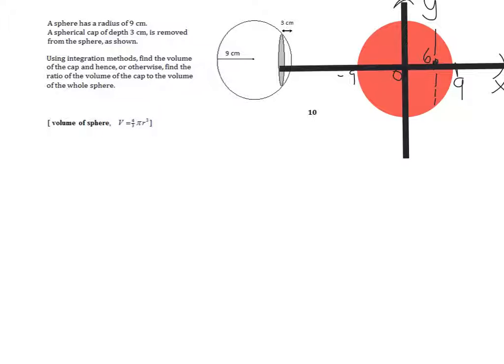Now I need to find a way of describing what I have here. That's a circle and you know that the equation of a circle with centre 0, 0 is x squared plus y squared equals r squared. So in this case x squared plus y squared is 81.